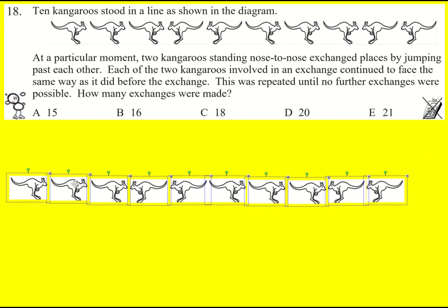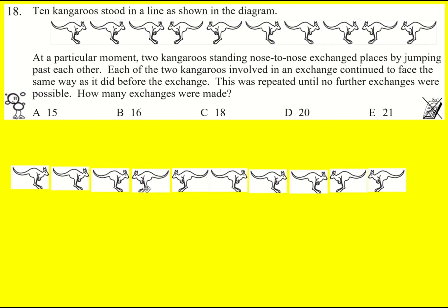I focused on the kangaroos facing to the left in this question and wondered how they would get past the ones facing to the right. So starting with this one, because it's the one furthest to the left, it's going to be one, two, three exchanges to get beyond those.